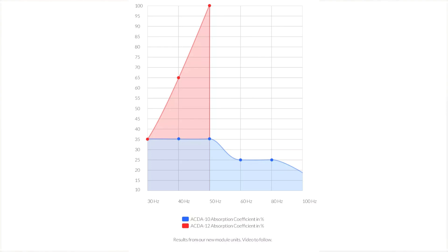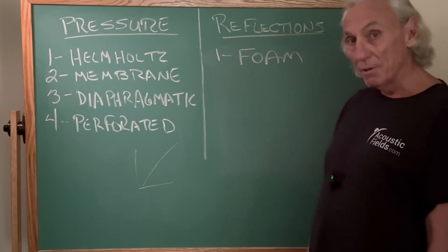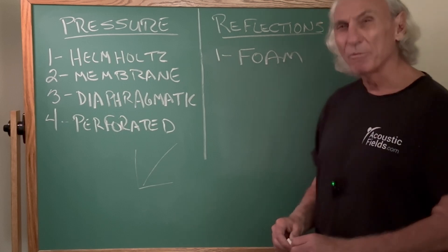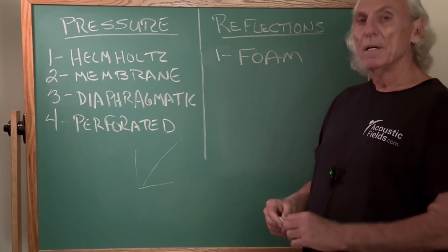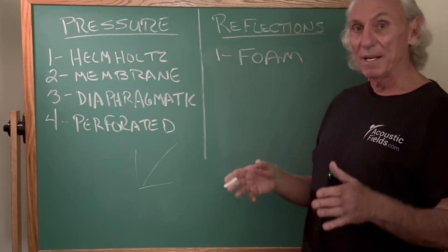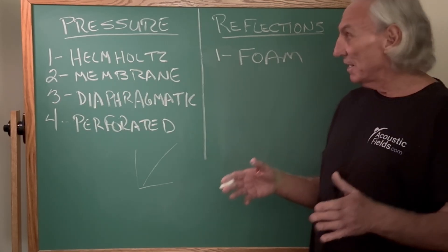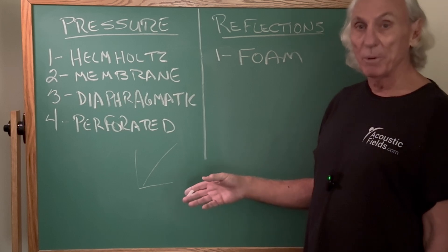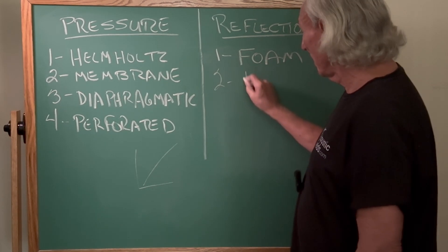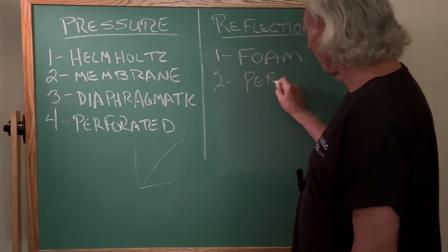Perforated - our CPA, you can see that in the shop section of the website, product 14, I believe. About a six, six and a half inch deep unit and it has a perforated face, so it can also work for pressure. It can also work over here for reflections, okay? So we could classify this over here too.